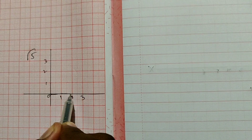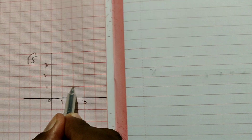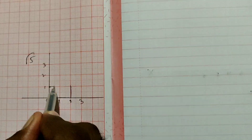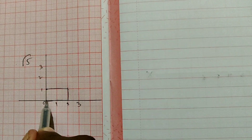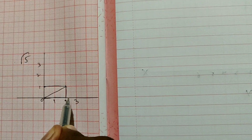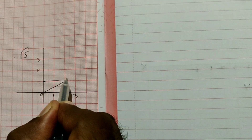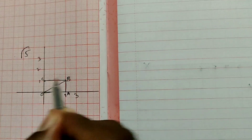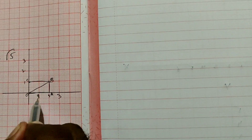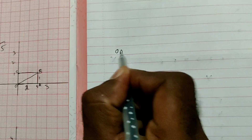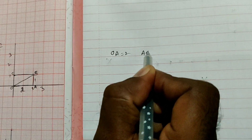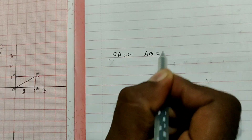Now for finding the value of root 5, take 2 units on the x-axis and 1 unit on the y-axis, forming a rectangle. Draw the diagonal and mark the points as O, A, and B. OAB is a right-angle triangle with the right angle at A. OA is equal to 2 units and AB is equal to 1 unit.